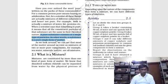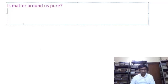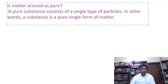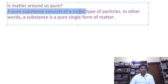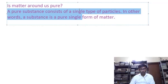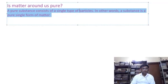So here is the definition. We'll just copy this and paste it. It says: a pure substance consists of a single type of particles. In other words, a substance is a pure single form of matter. That is the definition of a pure substance as far as we are concerned.